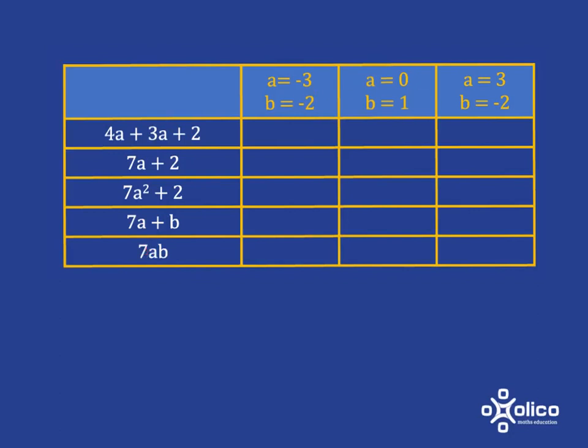So for example, when a is negative 3 and b is negative 2, let's look at this. We don't have to worry about b because there isn't a b in this one. So a is negative 3. We're going to get 4 times negative 3, which is negative 12. Then we're going to get 3 times negative 3, which is negative 9. Negative 12 plus negative 9 is negative 21, and then we have to add on 2, so we're going to get negative 19.